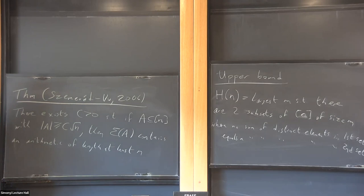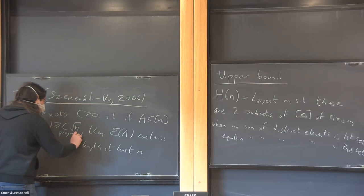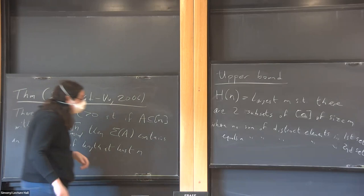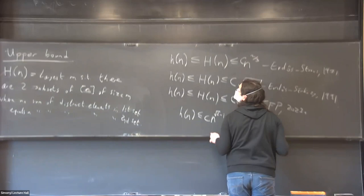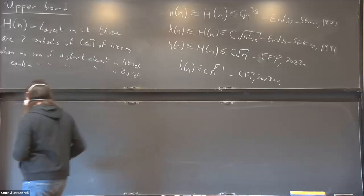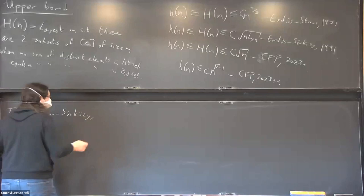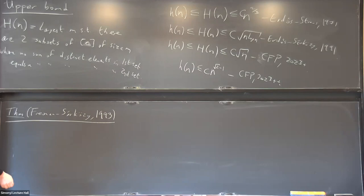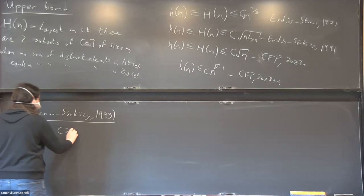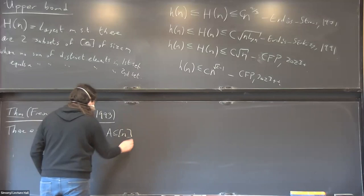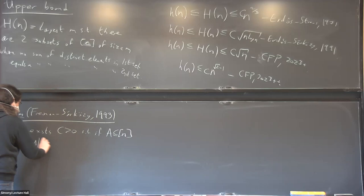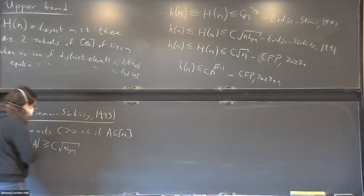Similar results go back to the 1960s in results of Erdős and Folkman, but this is sort of the end of the line in terms of when you get that Σ(A) contains an arithmetic progression. An earlier and weaker result is that of Freiman and Charcutley, proved independently in 1993.